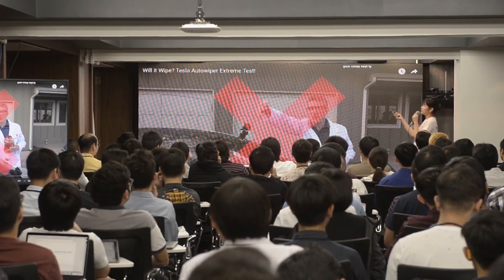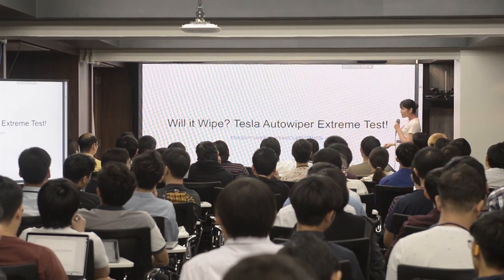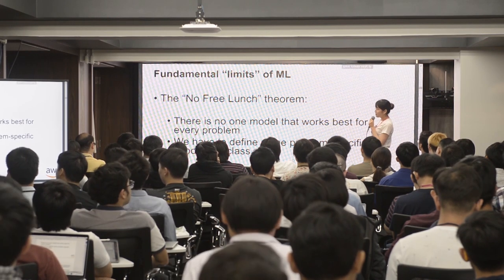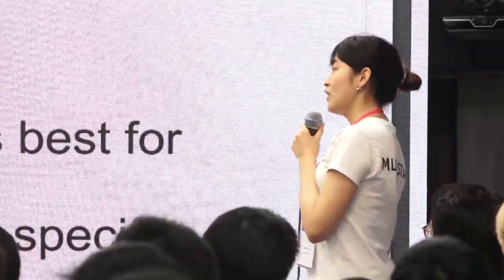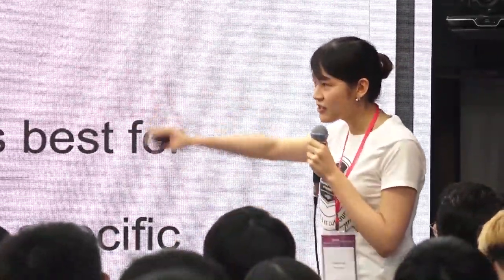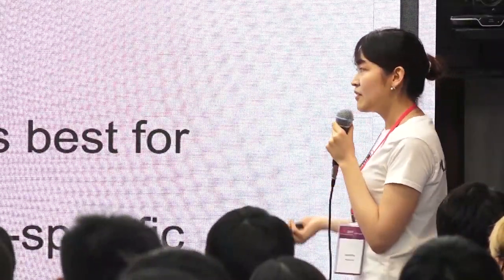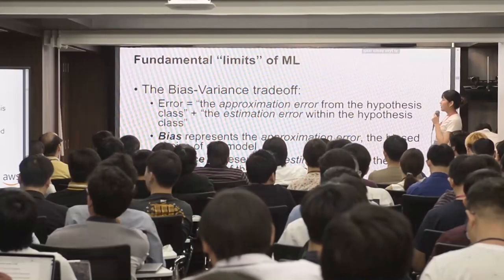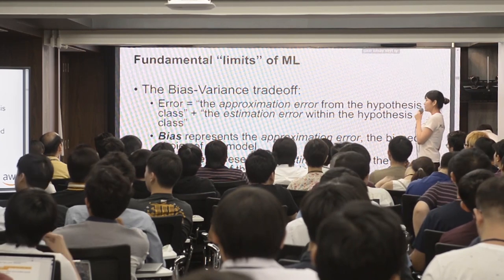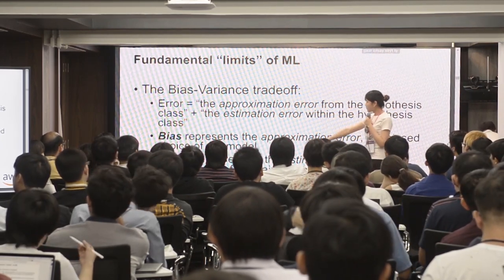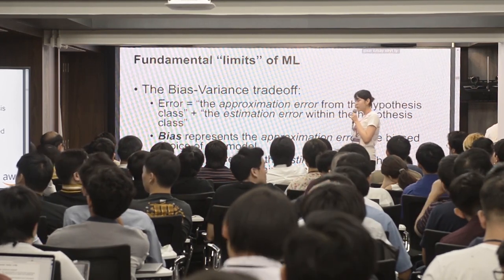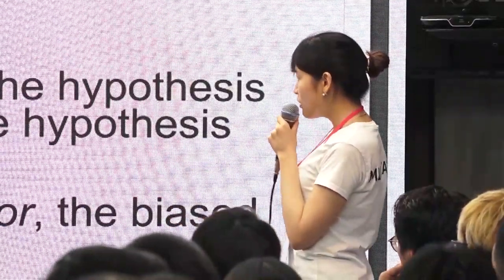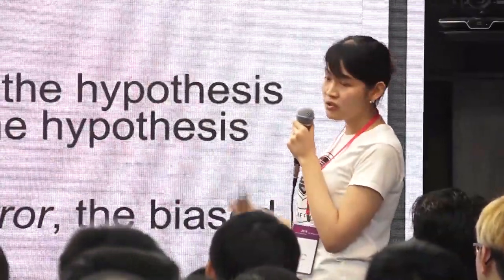Definitely there are lots of machine learning models that don't work well. This brings us to the fundamental limits of machine learning — there's no free lunch. If we don't have data covering special cases, we probably can't find the best model. We need hypotheses to define our mathematical models. There's also a famous bias-variance tradeoff: error roughly equals bias squared plus variance, where bias is the approximation error from the hypothesis class and variance is the estimation error within it.